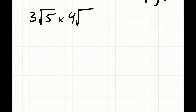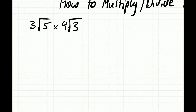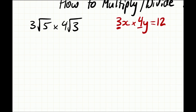The way we multiply and divide surds is quite similar to algebra. Similarly, if we had something like 3x and we're multiplying that by 4y, the way we do this is first of all we multiply our coefficients, so we have 12, and then we just have xy, because the x and y are multiplying themselves.